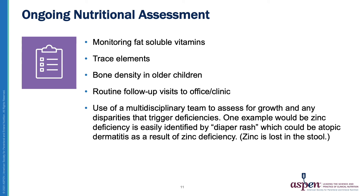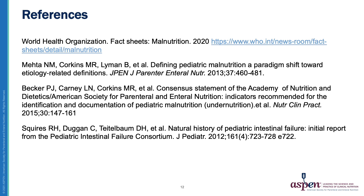The most important part of all of this is the ongoing nutritional assessment. We need to monitor fat-soluble vitamins and trace element levels. As the children get older, we should include bone density as part of their nutritional assessment. Routine follow-ups to the office and clinic are vital. The use of a multidisciplinary team to assess for growth and any disparities that trigger deficiencies is essential. One example would be zinc deficiency, which is easily identified by diaper rash or atopic dermatitis as a result of zinc deficiency, and as we all know, zinc is lost in abundance in the stool. This ends the presentation. Thank you so much for listening.